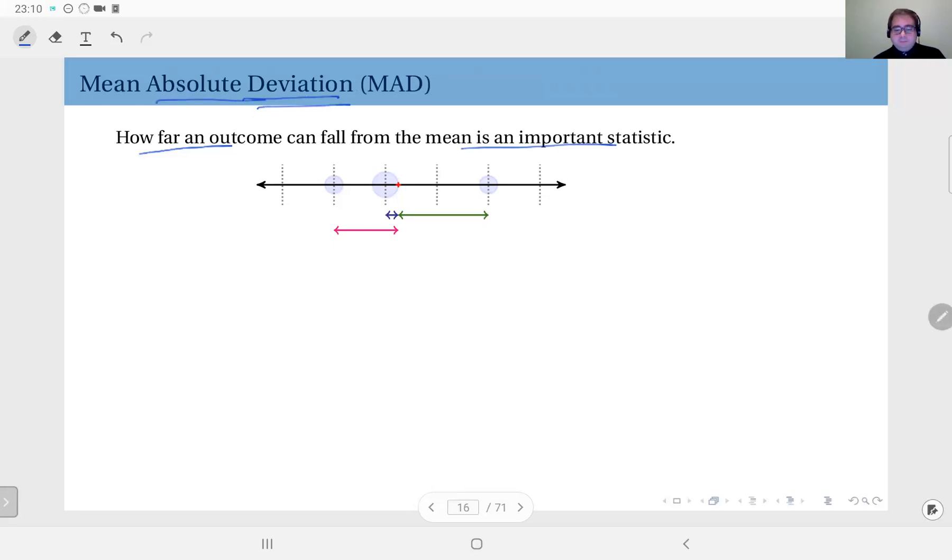So you are measuring the distance. In this example distribution, remember we had a one-over-four probability here, a one-over-four probability here, a one-half probability here.